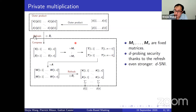The two refreshes provide the probing security of the multiplication gadget. The security can be even stronger — it can be DSNI, where the composition of several gadgets is also probing secure.